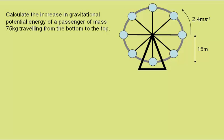Now we're asked to calculate the increase in gravitational potential energy of a passenger of mass 75 kilograms travelling from the bottom of the ride to the top.